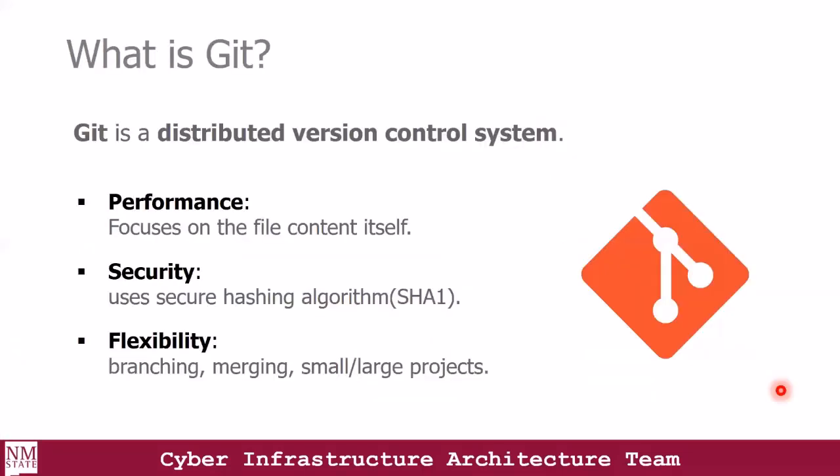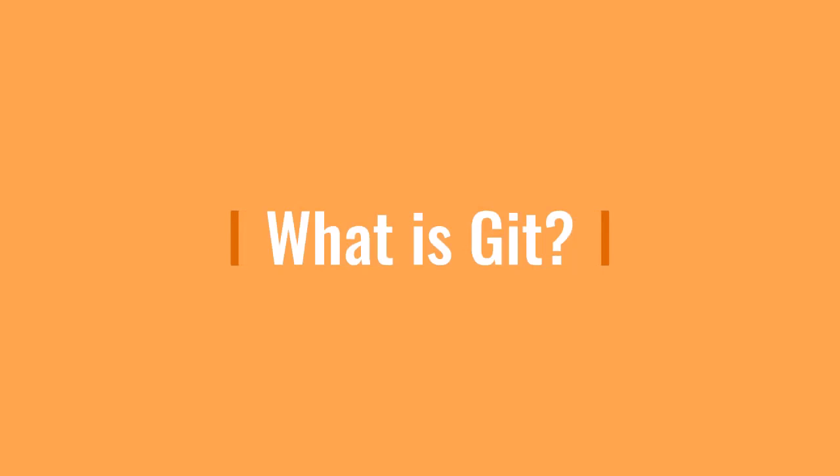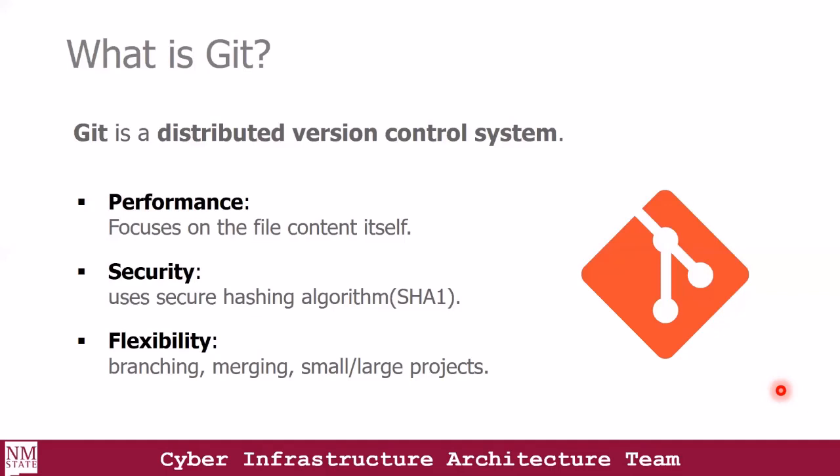So what is Git? Git is a distributed version control system. It is a de facto standard — the most broadly adopted tool of its kind. Currently, we have a vast number of developers using Git, and a significant proportion of college students have experience with just Git. Git offers performance, security, and flexibility with functionalities such as branching, merging, and creating smaller or larger projects.